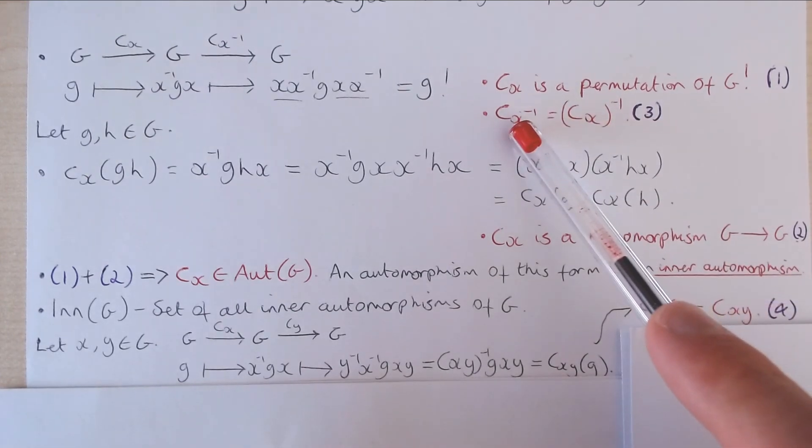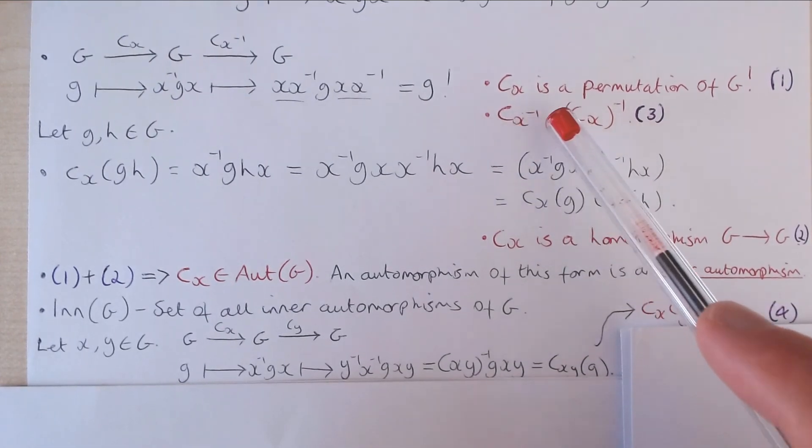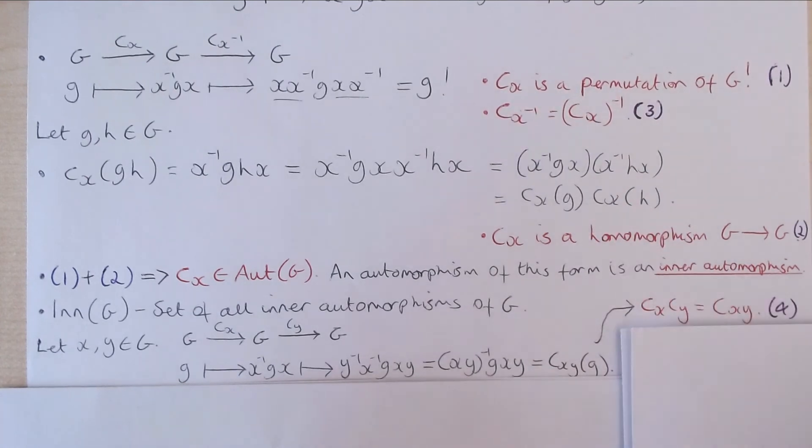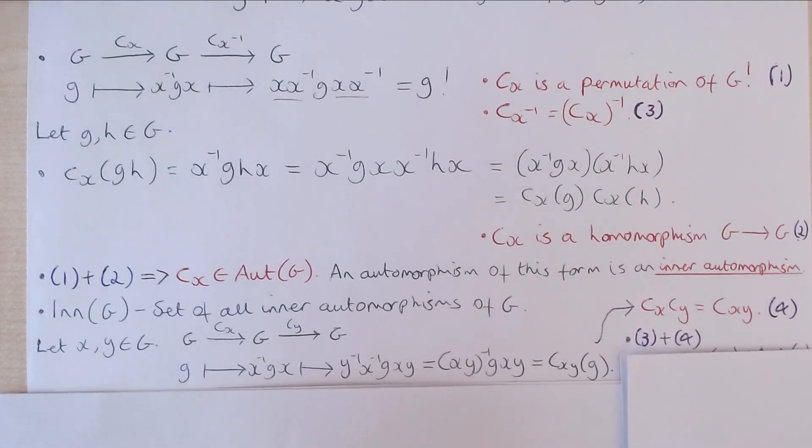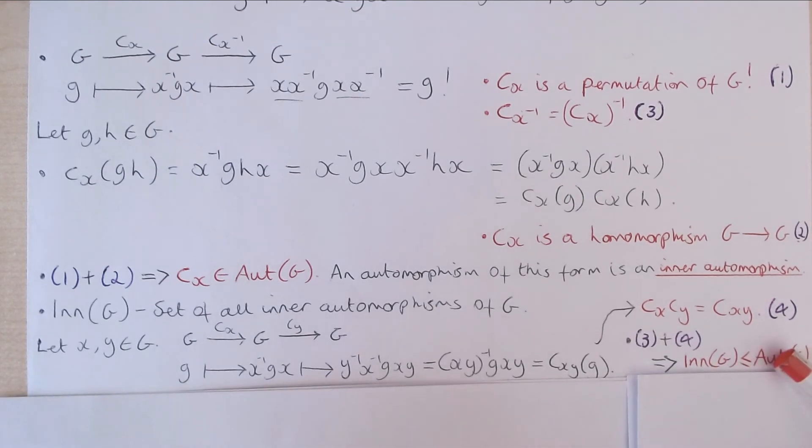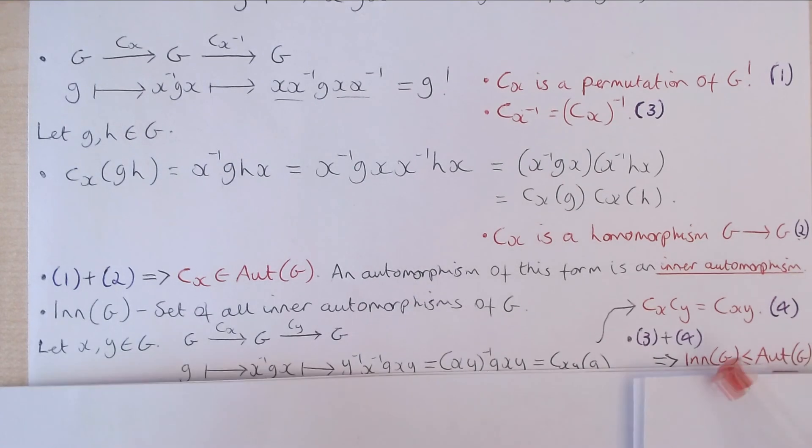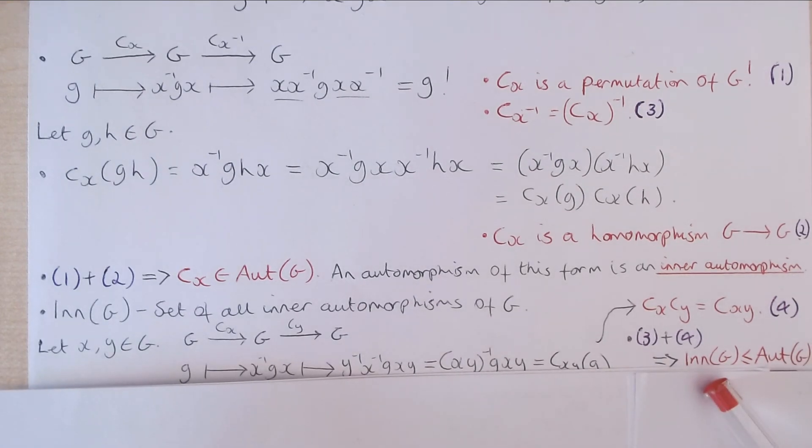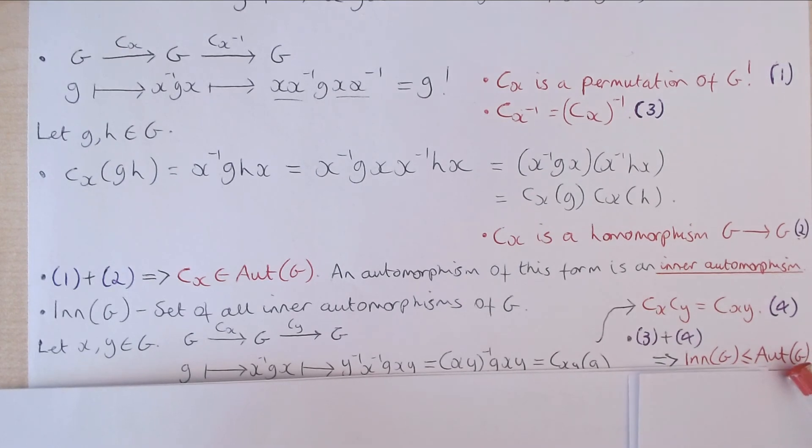And from this point here we've got that the inverse of an inner automorphism is an inner automorphism. So what this says is that the set of all inner automorphisms of G is actually a subgroup of the automorphisms of G. In the second part we will show that the inner automorphisms of G is actually a normal subgroup of the automorphisms of G.